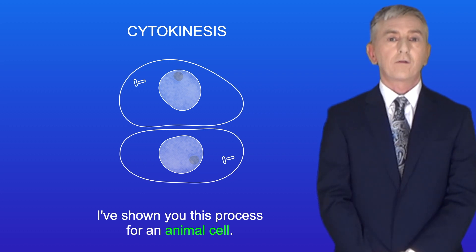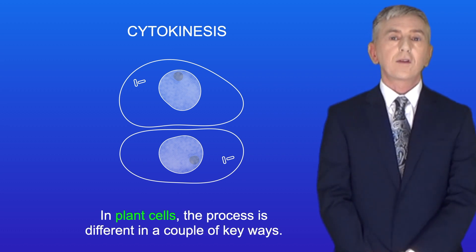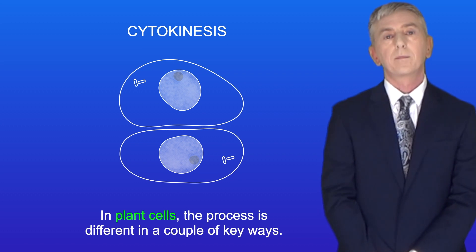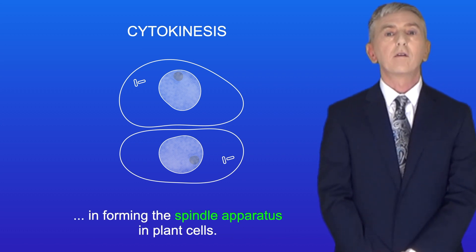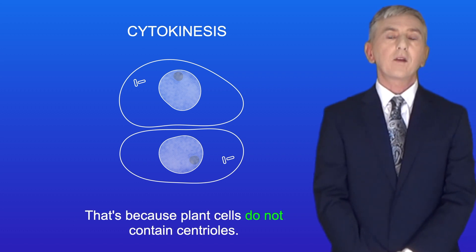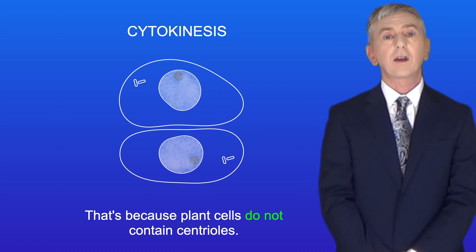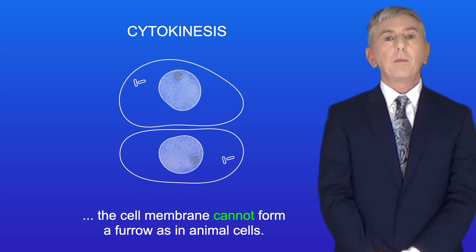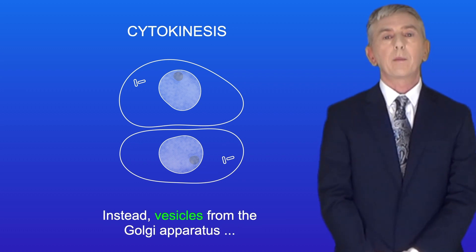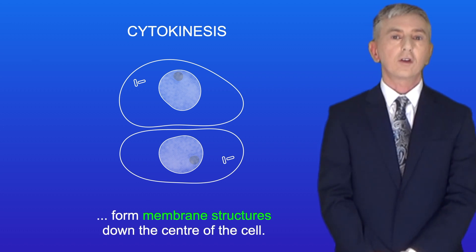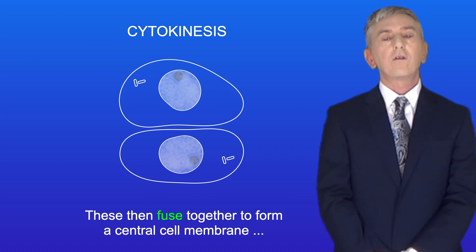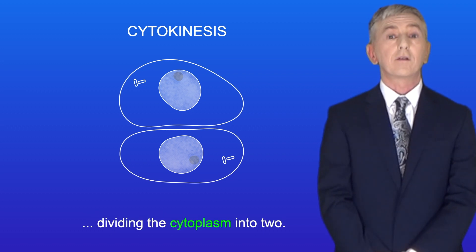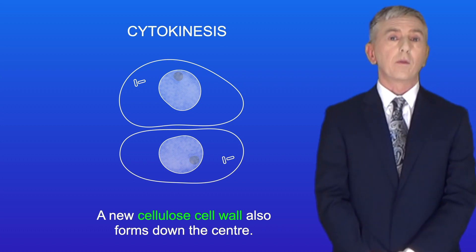This process has been shown for an animal cell. In plant cells the process is different in a couple of key ways. Firstly, centrioles do not play a role in forming the spindle apparatus in plant cells, because plant cells do not contain centrioles. Secondly, when plant cells undergo cytokinesis, the cell membrane cannot form a furrow as in animal cells. Instead, vesicles from the Golgi apparatus form membrane structures down the centre of the cell. These then fuse together to form a central cell membrane dividing the cytoplasm into two. A new cellulose cell wall also forms down the centre.